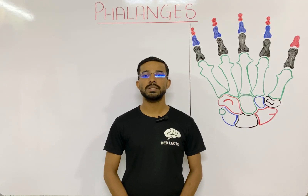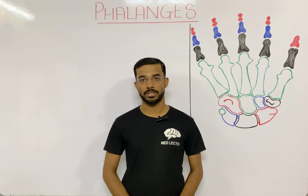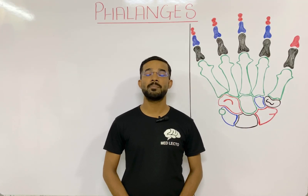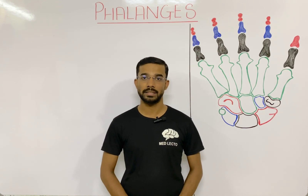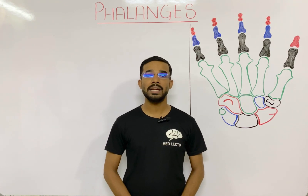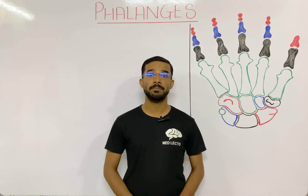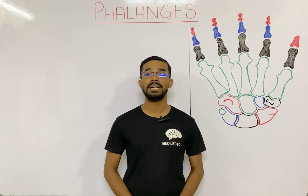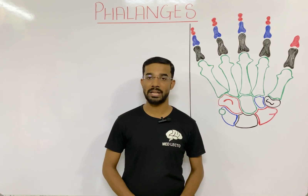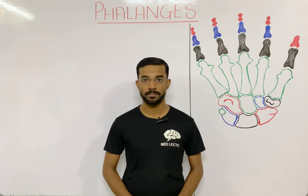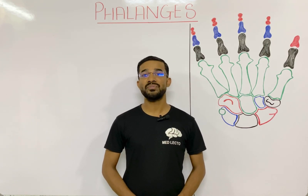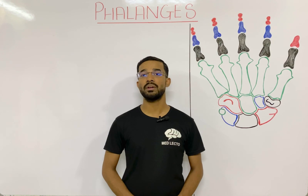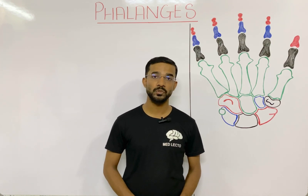In this lecture we are going to discuss the phalanges. Phalanges are basically the bones of the fingers and the thumb. There are 14 phalanges in one hand, so both hands have 28 phalanges. In each finger you will see three phalanges, but in the thumb you will see only two phalanges.